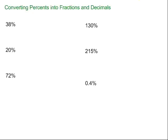Now let's convert percents into fractions and decimals. To convert a percent into a fraction, we need to remember the definition of a percent. Percent means per 100. So 38% really means 38 per 100. That sounds a lot like a fraction. 38 per 100. There's our fraction.